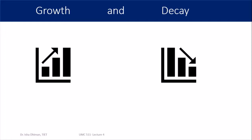Let's first understand what growth and decay mean. Going by their literal meanings, growth means something which is rising and decay means something which is decreasing or falling. Usually in most examples we are looking at the growth and decay of certain physical quantities with respect to time — what is happening to a particular thing with respect to time, either it is rising or it is decaying.